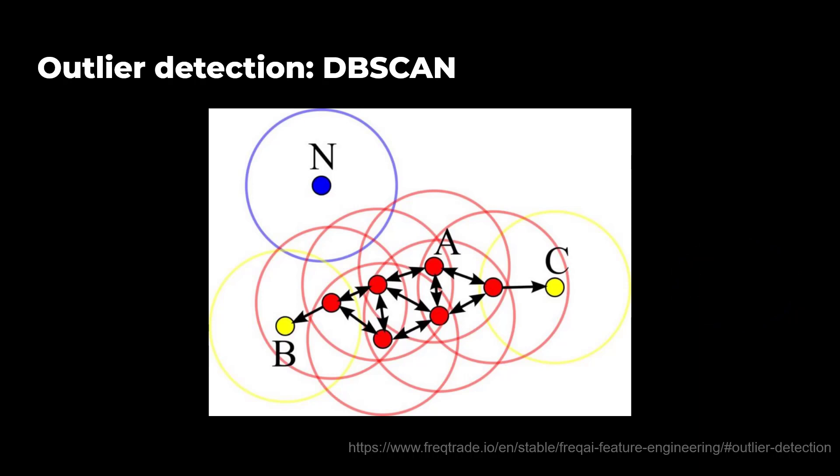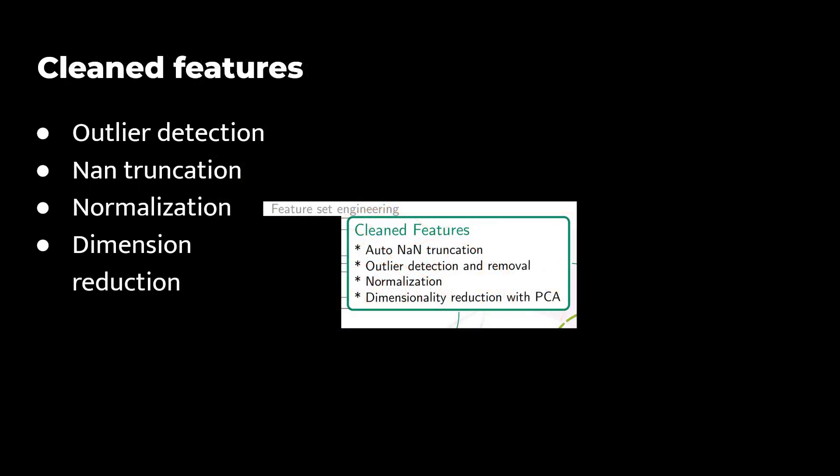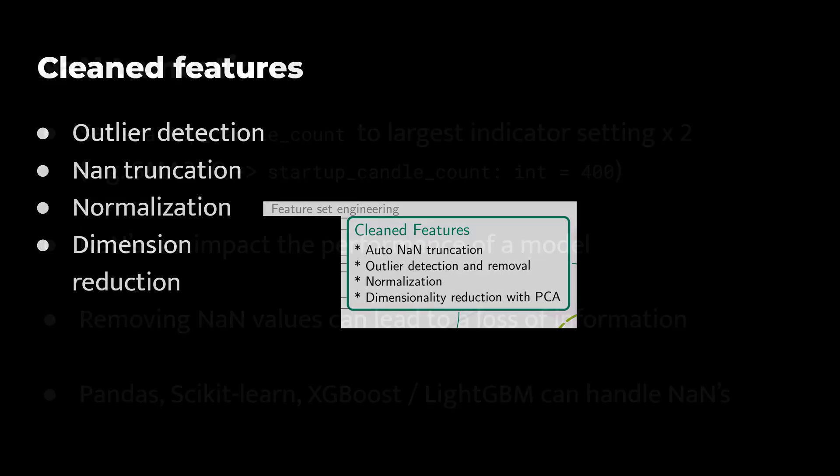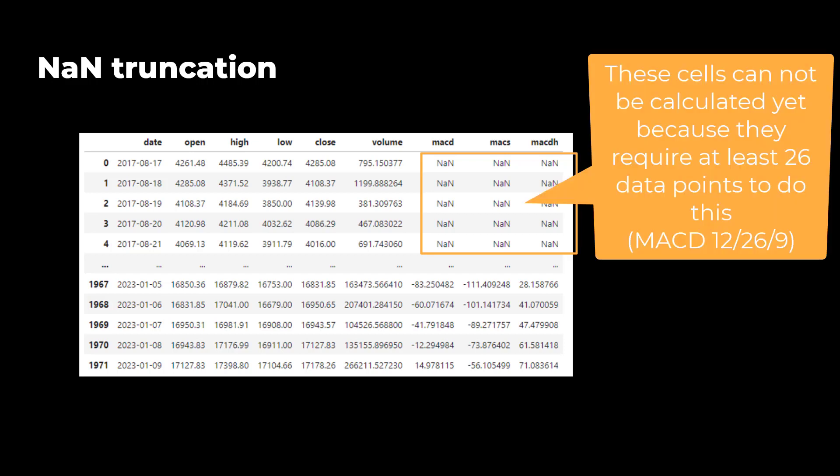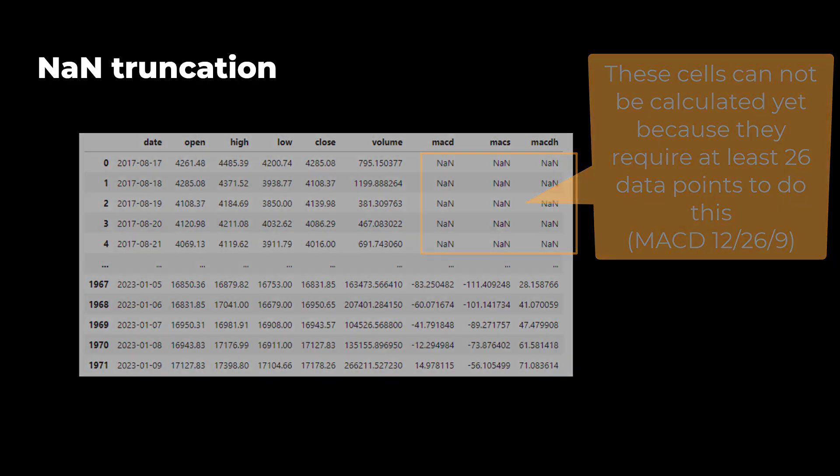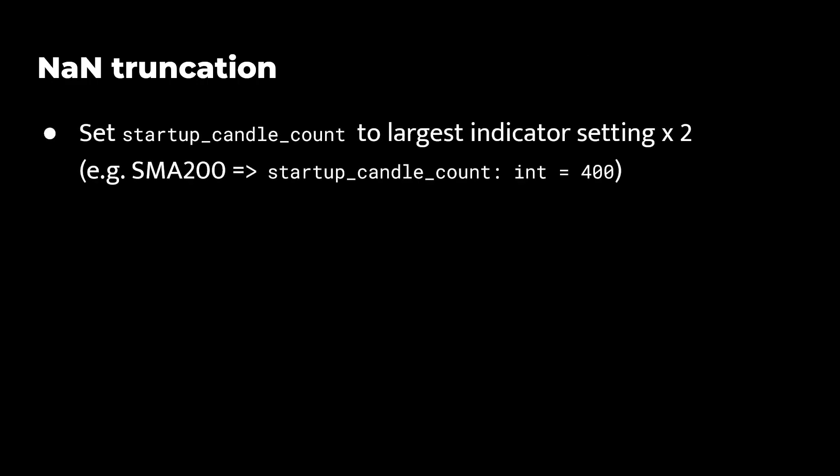And again, do not expect formulas or details here on these filtering processes, these are just high-level explanations here. Now to finish this video, I will go over the none-truncation, normalization and dimension reduction. None stands for not a number. And you can imagine nones in this context as calculations or data points that do not have a number and therefore contain the none indication. Now to avoid initial nones in the data frame, the advice is to first set the startup candle count to the largest indicated time period and then multiplying it by 2. So in the case of the 200 SMA, you should set this value to 400.